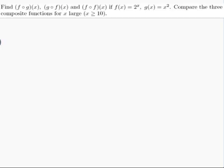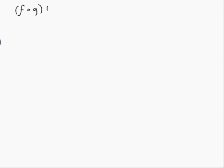f of g of x is a new function constructed from f and from g. It's got a formula all of its own, and we figure it out by doing f on the result of g — so it's f of g of x. f is 2 to the power of x, so 2 to the power of something, and the something we put there is g of x. But g of x is x squared, so f of g of x equals 2 to the power of x squared.